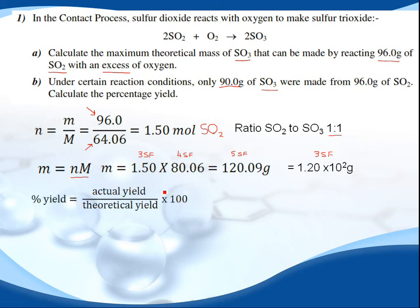Here's our equation for percentage yield: actual yield divided by theoretical yield times 100. The actual yield is told in the question here. The theoretical yield is there—we've just calculated it.